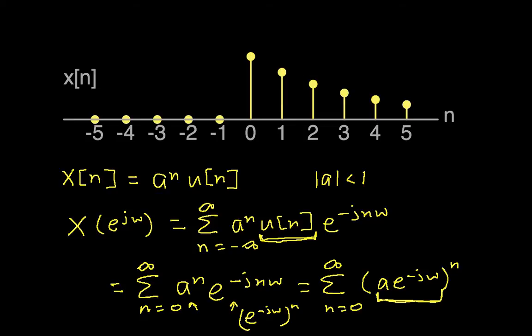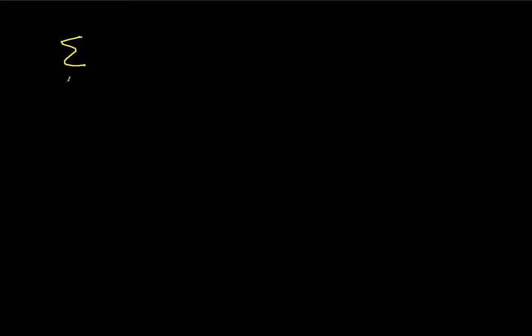Let's see. We'll bring up an empty page here. We'll rewrite this n going from 0 to infinity, a e to the minus j omega, this raised to the nth power. This is going to be equal to 1 over 1 minus a e to the minus j omega. Again, this is basically just the formula for the sum of a geometric series. So in a sense we're done. This is the Fourier transform of this guy.